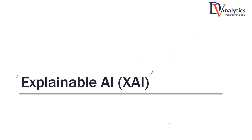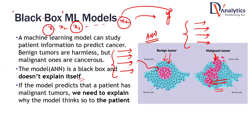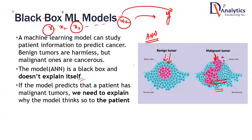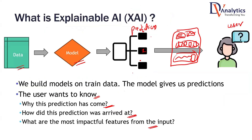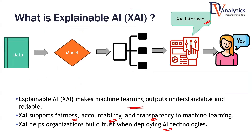Let us suppose you have built a model that predicts whether a patient has cancer or not. If you are selling this product to a very big hospital, the doctors may ask: we are okay with the predicted values, but how do we explain it to our patients? Why do we trust your model? How do we understand the predictions made by your model? We cannot tell them that this is a black box model and we cannot explain anything — they may not buy that particular reasoning.